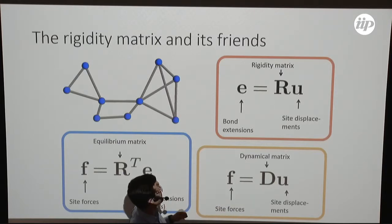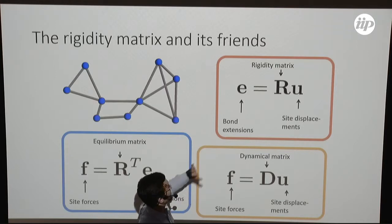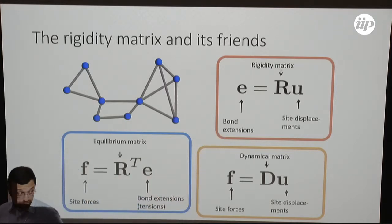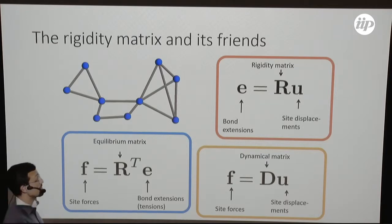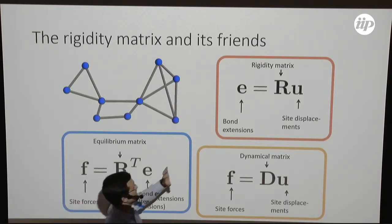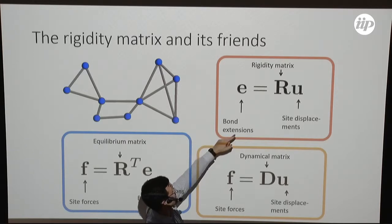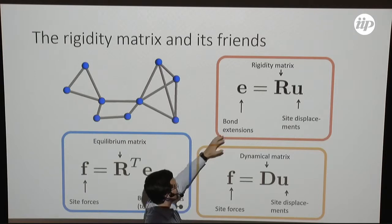But we're going to see that it's quite useful to keep track, rather, of the bond extensions, in part because we're removing bonds at the boundary, and the dynamical matrix doesn't tell us what happens if we remove bonds, and in part because this is a more general object. In particular, this rigidity matrix doesn't have to be a square matrix. It can be a rectangle if we have more sites than bonds or vice versa.